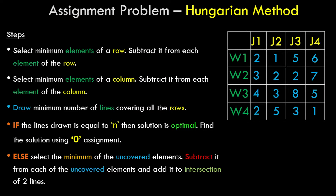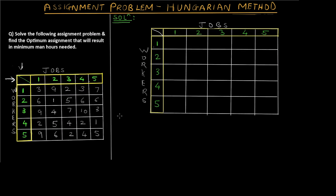We have a 2D matrix with four different jobs and four different workers and the time required. The steps are: first, select the minimum element of a row and subtract it from each element of that row. Second, select the minimum element of a column and subtract it from each element of that column. Third, draw the minimum number of lines covering all zeros. If the number of lines equals n (the number of workers or jobs), the solution is optimal and we assign based on zeros. Otherwise, select the minimum uncovered element, subtract it from all uncovered elements, and add it to the intersection of two lines.